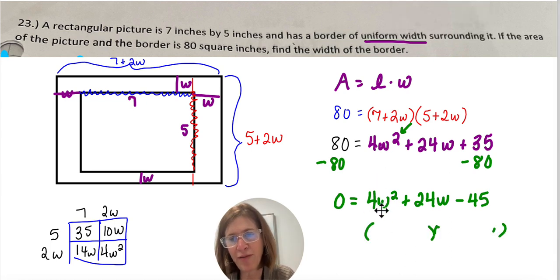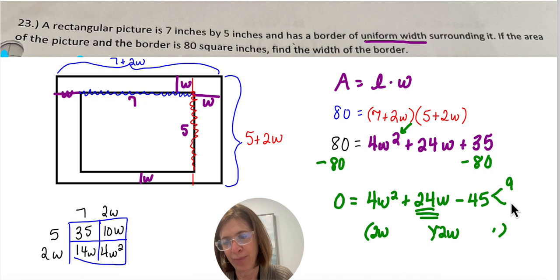Alright, so I'm going to try and factor. So I'm going to look at the factors of 4, which would be 2 and 2. I'm going to start with 2 and 2, so 2W and 2W. And then the factors of 45 that, when multiplied, they're going to add to 24. Alright, so I've got my factors of 45 are 9 and 5 and 15 and 3.